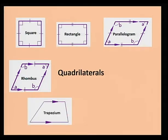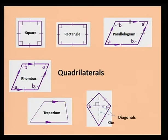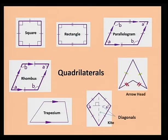This is a trapezium where we have one pair of parallel sides. This is a kite. In a kite, we have two diagonals that meet perpendicularly. In a kite, we have two pairs of equal sides and one pair of equal angles. This figure is an arrowhead — here we also have two pairs of equal sides.